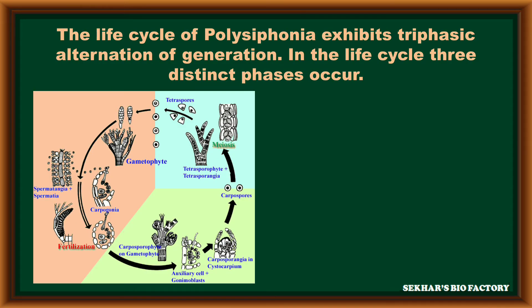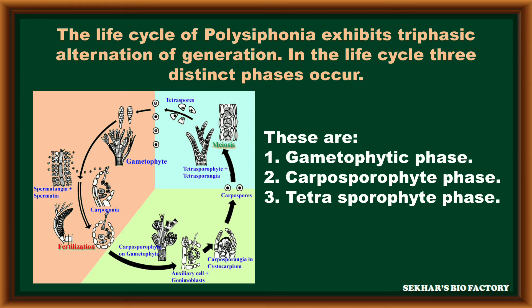In the life cycle of Polysiphonia, it exhibits triphasic alternation of generations, in which three distinct phases occur alternatively. These three phases are the gametophytic phase, the carposporophytic phase, and the tetrasporophyte phase.